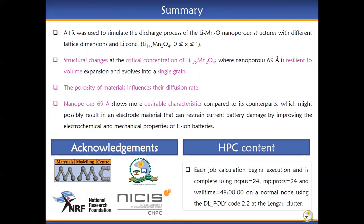Nanoporous 69 shows more desirable characteristics compared to its counterparts, which might possibly result in an electrode material that can restrain current battery damage by improving the electrochemical and mechanical properties of lithium-ion batteries.